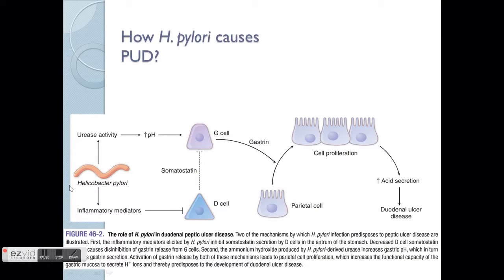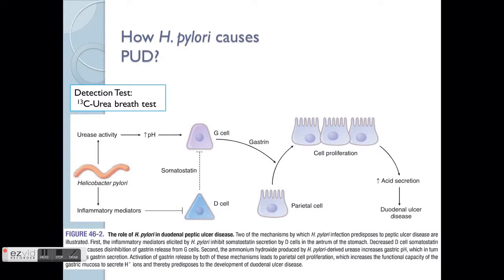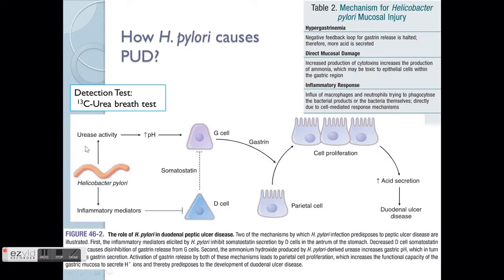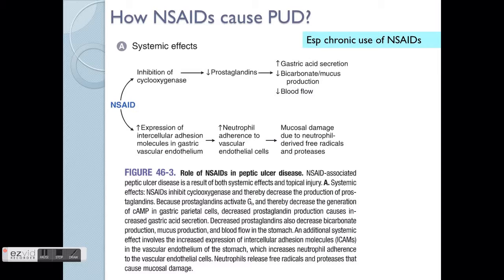How does H. pylori cause PUD? H. pylori is a type of bacteria. There are two main mechanisms. It has urease activity that increases the pH, which is problematic because the stomach needs to be at a low pH — meaning high acidity. It also increases inflammation mediators, making the whole area inflamed. Overall, it causes effects on gastrin, increasing excessive gastrin release, which leads to more parietal cell proliferation. More parietal cells means more acid secretion and more chances of getting ulcers. Detection is done via the urea breath test, which detects urease activity.